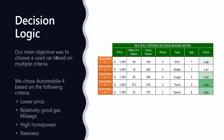Our main objective was to choose a used car based on multiple criteria. We chose automobile four based on the following: a lower price — automobile four had the lowest price; relatively good gas mileage, though it wasn't the best at 16.5; high horsepower — it had the highest horsepower; and newness — it was only two years old.